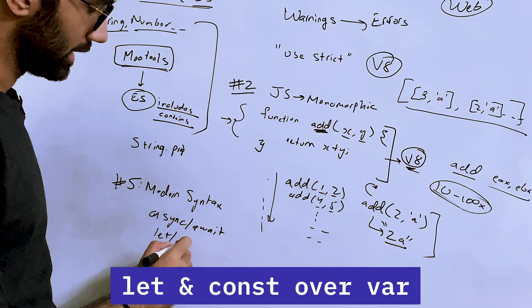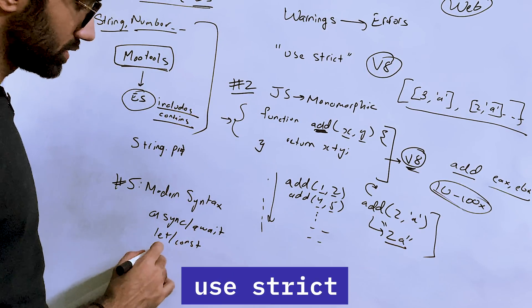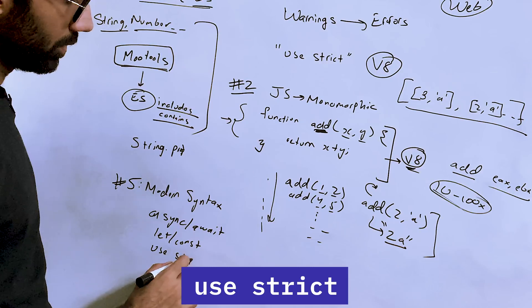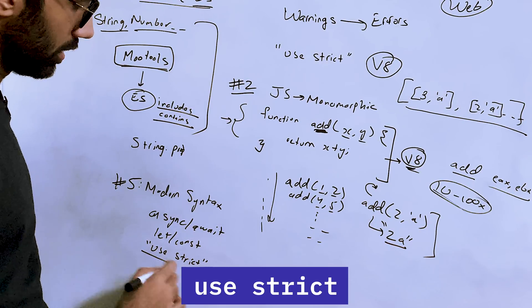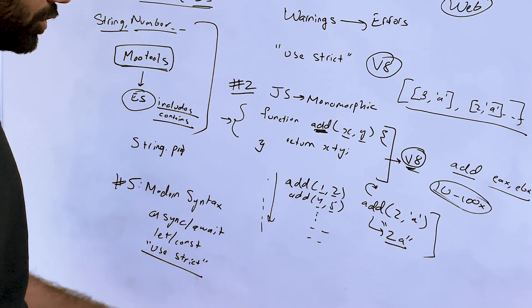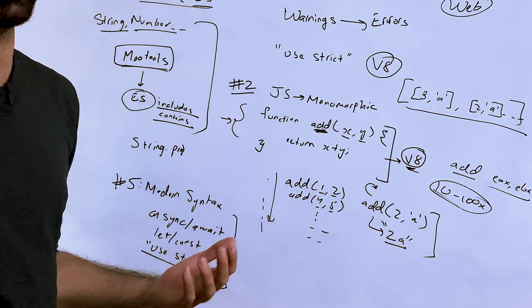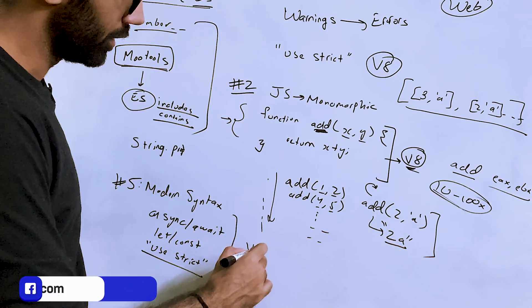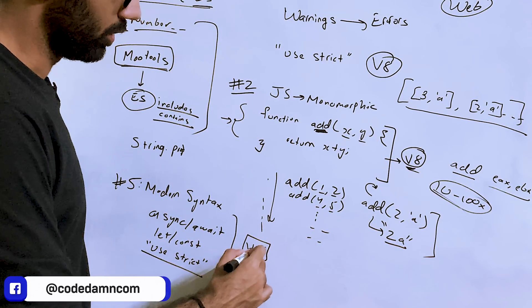The let and const variable declaration is an example of this. Use strict is also something I would put in modern syntax, although it's not modern syntax. It has been there for a while, but still you should use all these good modern practices.